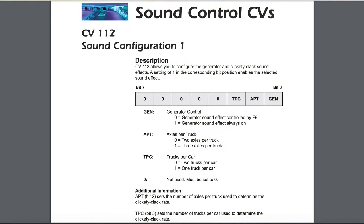First, we're going to look at CV112. CV112 will adjust a few things you look at for every freight car: the number of axles on a truck and the number of trucks per car. Also in CV112 we can determine whether the F9 generator — in this case the diesel refrigeration unit — will be on all the time or triggered by a function.